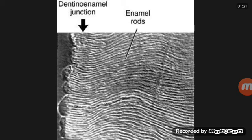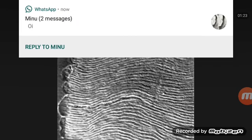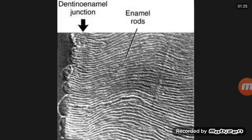The diameter of the rods averages 4 micrometers; rods measure about 5 micrometers in breadth. Each enamel rod is built up of segments separated by dark lines that give it a stratified appearance.